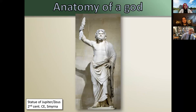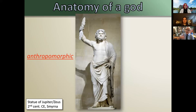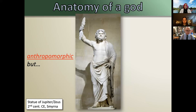One thing to note about our god, as we see in the statue, is that he is anthropomorphic — human-shaped. This is very distinct from the Judeo-Christian God, who is all-powerful, all-knowing, but unknowable. For the Greeks and Romans, these gods were very much human-shaped, both inside and out. They look like humans and behave like humans — they can get angry, sad, happy, and be attracted to other beings.